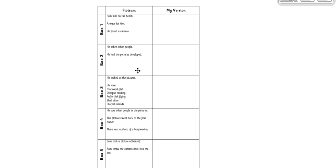After he's looked at the pictures, we're onto box four. He saw other people in the pictures. The pictures went back to the first owner, and there was a photo of a boy waving. And at the end, box five, Sam took a picture of himself. Sam threw the camera back into the sea.